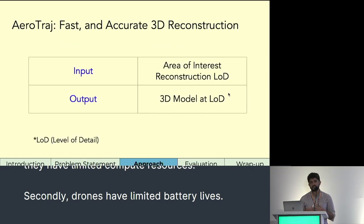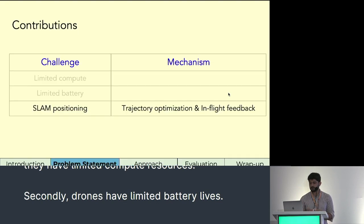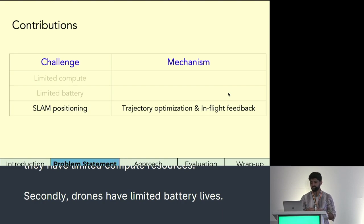To this end, we build AeroTraj, which, given some area of interest, can reconstruct an object in that area with some user-defined level of detail. For this talk, I'm only going to focus on how we can ensure high positioning accuracy using SLAM with a novel trajectory optimization technique and in-flight feedback.